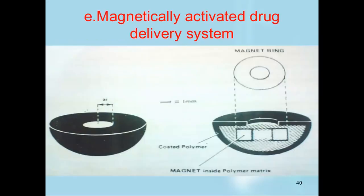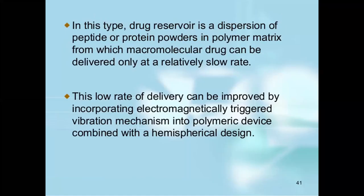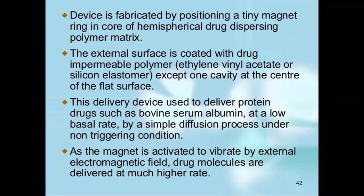Next is the magnetically activated drug delivery system. In this type, the drug reservoir is a dispersion of peptide or protein powders in a polymer matrix from which a macromolecular drug can be delivered only at a relatively slow rate. This lower rate of delivery can be improved by incorporating an electromagnetically triggered vibration mechanism into a polymeric device combined with a hemispherical design. This device is fabricated by positioning a tiny magnet ring in the core of a hemispherical drug-dispersing polymer matrix. The external surface is coated with a drug-impermeable polymer such as ethylene vinyl acetate or silicone elastomer, except for one cavity at the center of the flat surface. This device is used to deliver protein drugs like bovine serum albumin at a low basal rate by simple diffusion under non-triggering conditions.